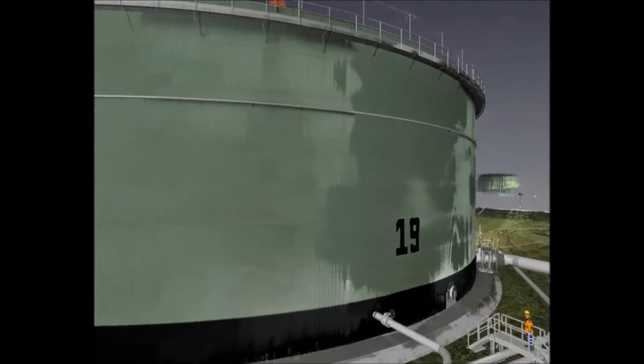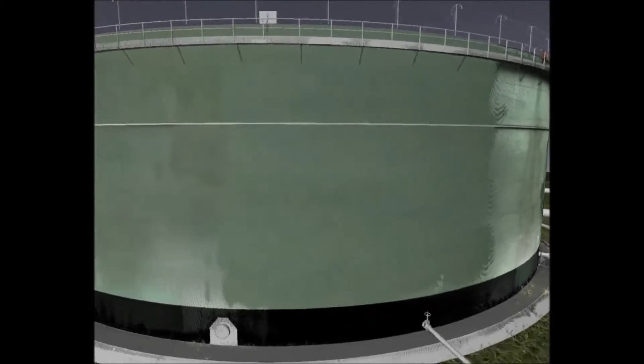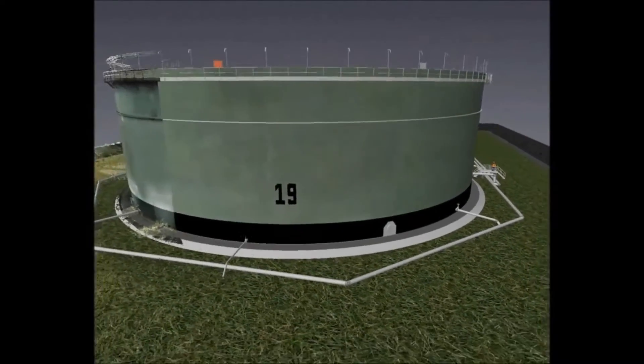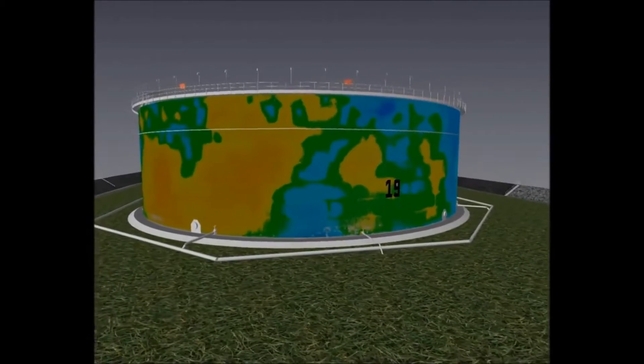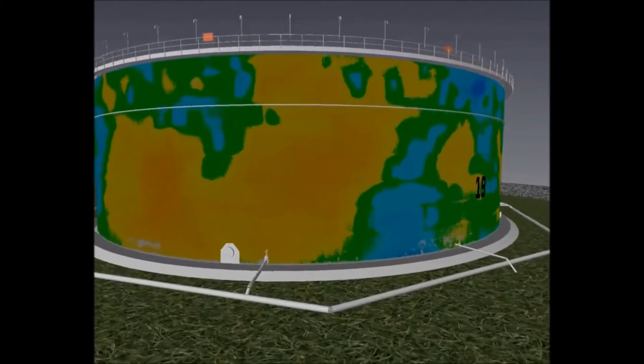Laser scanning can be used for accurate deformation monitoring. In order to determine the deformation of the tank shell, each individual point is assigned a value using its distance from the centre of the tank, its point radius.